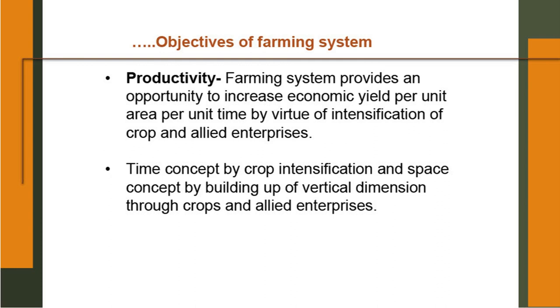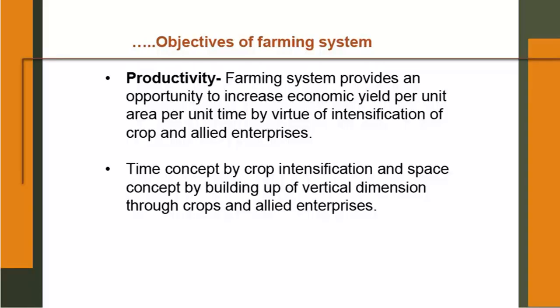Productivity: farming system provides an opportunity to increase economic yield per unit area per unit time by virtue of intensification of crop and allied enterprises. Here intensification of crop is followed, which may help in increasing income. Time concept by crop intensification and space concept by building up of the vertical dimension through crops and allied enterprises. So vertical farming is also possible here. For example, if you have crops and a fence around the pond, you can have climbers or vegetables that can grow on the fences — like cucurbits or some other vegetables grown on fences. So no space is left unused.